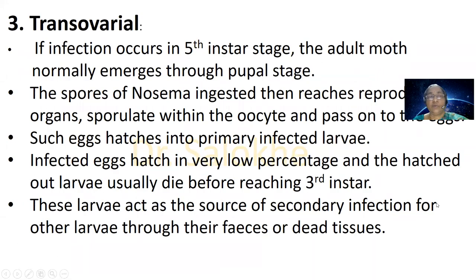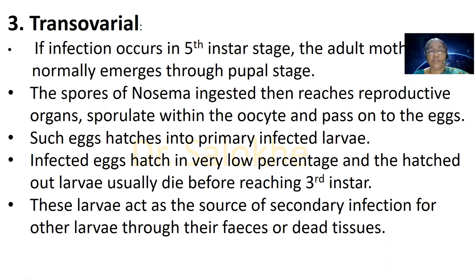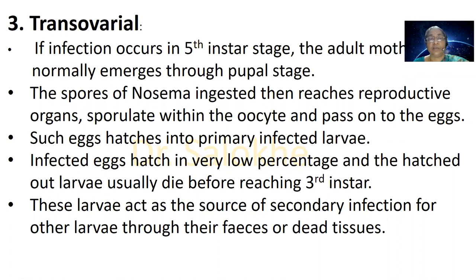The third route is transovarial transmission. As the name indicates, it is transmitted through the ovary of the mother moth. If infection occurs in the fifth instar stage — the last larval stage in the life cycle of the silk moth — the spores of Nosema ingested then reach the reproductive organs, sporulate within the oocyte, and pass on to the eggs. Such eggs hatch into primarily infected larvae. Infected eggs hatch in very low percentage, and the hatched larvae usually die before reaching the third instar. These larvae act as the source of secondary infection for other larvae through their feces or dead tissues.